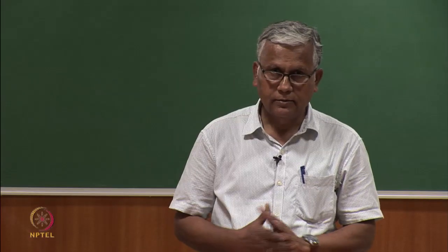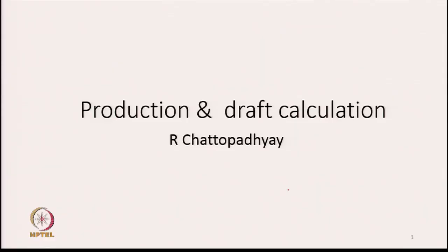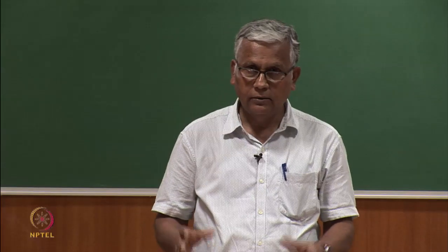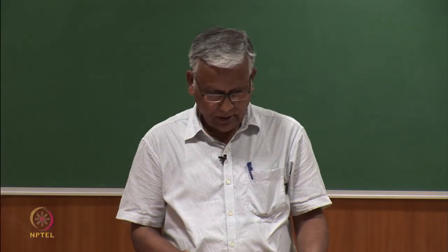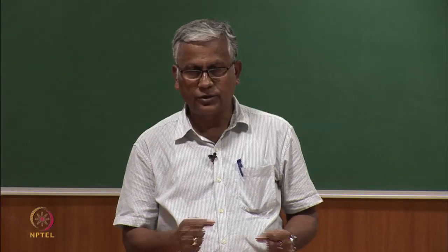Today we are going to discuss production and draft calculations. We have already discussed draft while discussing the carding machine, and it was told that there could be two types of draft: mechanical draft and actual draft. Mechanical draft is the ratio of surface speeds of front and back rollers, and it tells us how much stretch is going to be applied to the sliver.